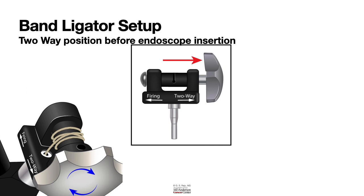There have been cases where a band was accidentally placed in the pharynx or uvula because the band ligator was introduced in the firing position. Important: when the endoscopy assistant gives the scope to the endoscopist, keep the band ligator set up in the two-way position, not the firing position.